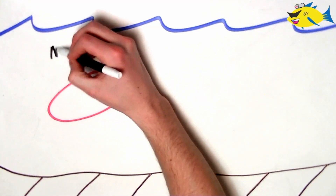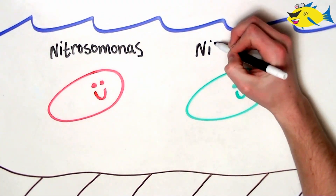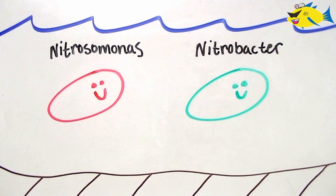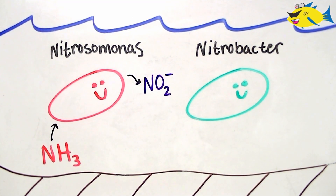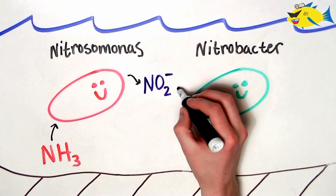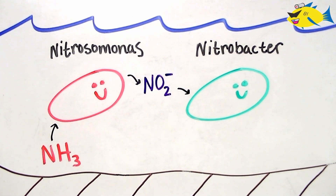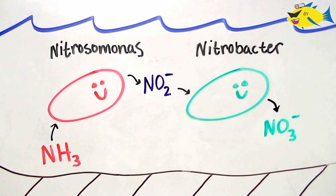These actions are performed by two separate bacteria — one in the genus Nitrosomonas and the other in the genus Nitrobacter. Nitrosomonas is responsible for the first oxidation, converting toxic ammonia to the slightly less toxic nitrite. This form of nitrogen is then released from the cell as a waste product, where it is now available for Nitrobacter to complete the final oxidative step, converting nitrite to the much less toxic nitrate.